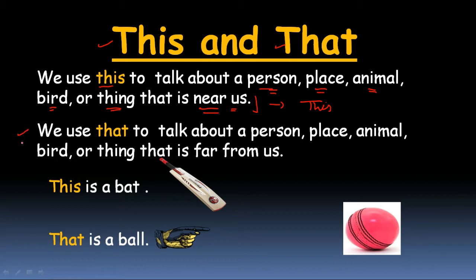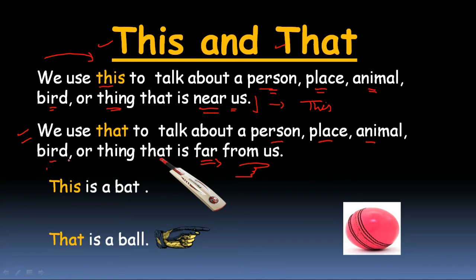And 'that' कहाँ use करेंगे? 'This' अगर हम use करेंगे जो चीज़ हमारे पास है उसको बताने के लिए, तो 'that' किसको use करेंगे — जो चीज़ हमसे दूर है। उसको बताने के लिए हम अपनी finger का इस्तेमाल करेंगे। So, we use 'that' to talk about a person, a place, an animal, a bird or thing that is far from us। Far मतलब दूर, और near मतलब पास।